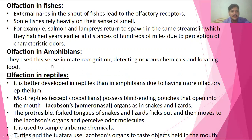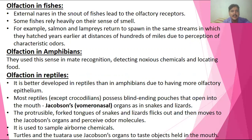In amphibians, olfaction is especially used for mating recognition, species recognition, and detecting noxious chemicals. Reptiles have several different receptors, including Jacobson's organs, also called vomeronasal receptors.